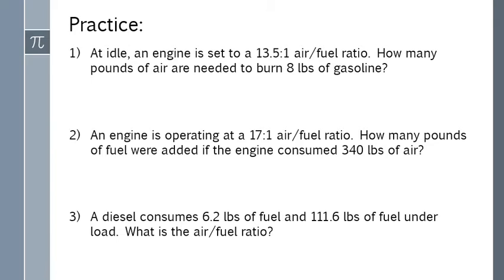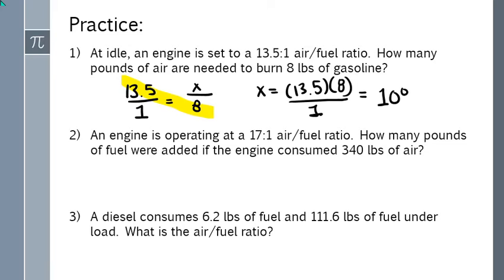Here's a few practice questions. Looking at number one, we're given an air-fuel ratio. Air over fuel. Air unknown over fuel, same thing as the last two examples. Where do I see the two numbers? Those are the ones that are going to multiply. 13.5 times eight divided by one, kind of unnecessary but just for clarity. And we're going to get 108 pounds. We need 108 pounds of air to burn eight pounds of gasoline in this engine at a 13.5 to 1 ratio.